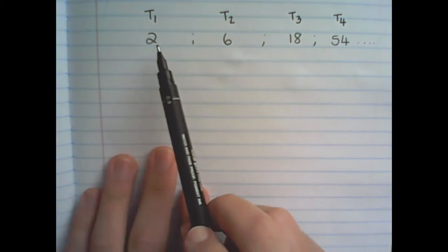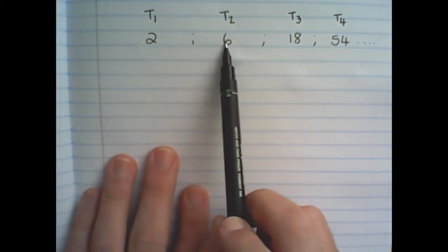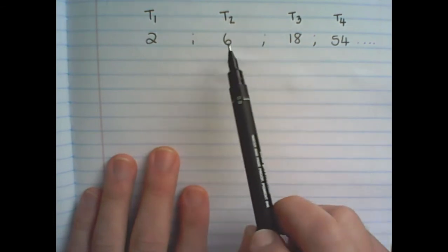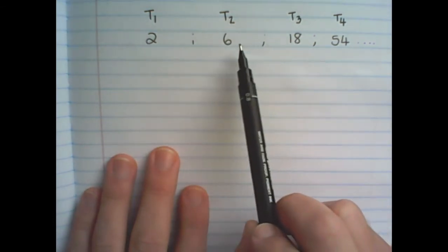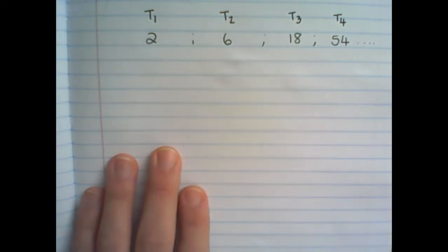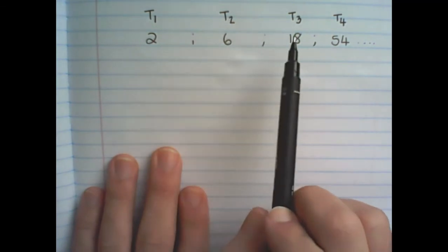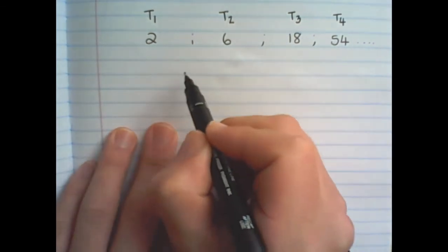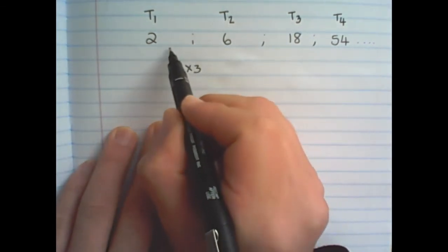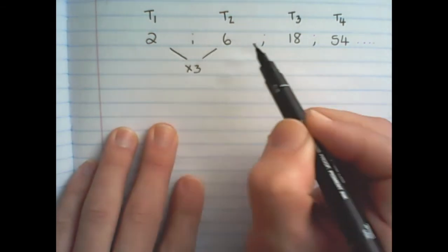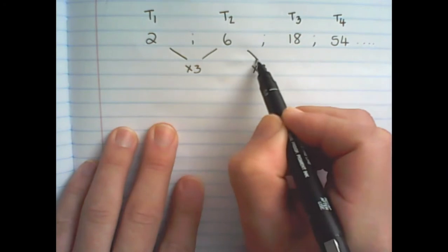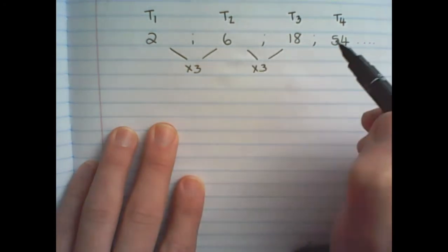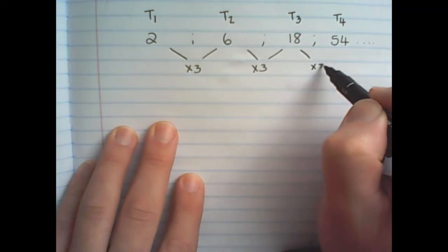But now you notice that going from 2 to 6 there is a difference of 4, between 6 and 18 there is a difference of 12, and from 18 to 54 there is a difference of 36. So this is clearly not a linear number pattern. But let us test what happens if I multiply by 3. So 2 times 3 would give me 6, 6 times 3 would give me 18, and 18 times 3 would give me 54.